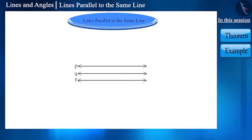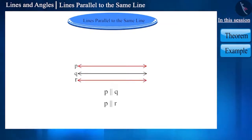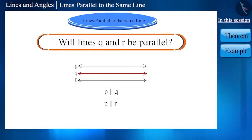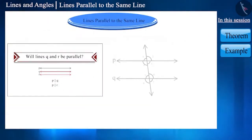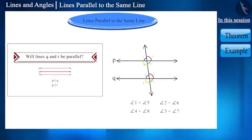Let's start with a question: if a line is parallel to two lines — that is, line P is parallel to line Q and line P is also parallel to line R — then will lines Q and R also be parallel? Let's take a look. In the previous video we saw that when a pair of corresponding angles are equal, the lines are parallel.